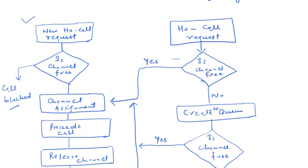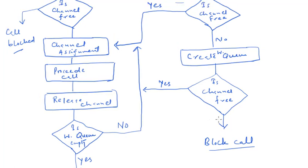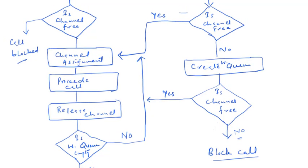When a handoff call request is received, you check if any channel is free. If free, the channel is assigned. If not free, a waiting queue is created, and after some time you check again if any channel is free. If free, the channel is assigned; if still not free, the call is blocked since there is no probability of having any channel available.